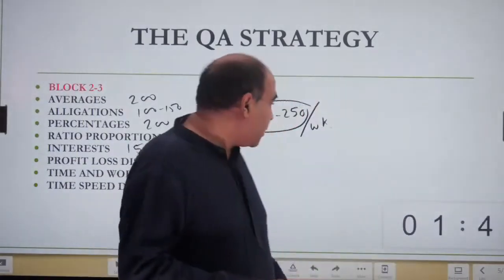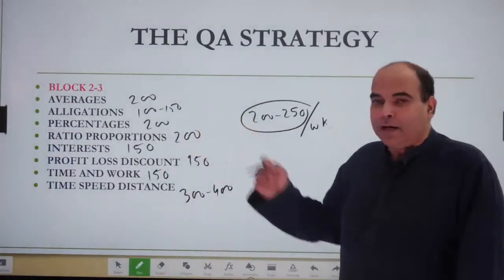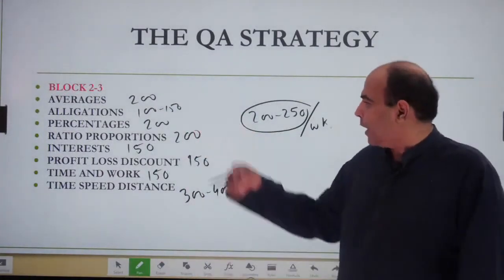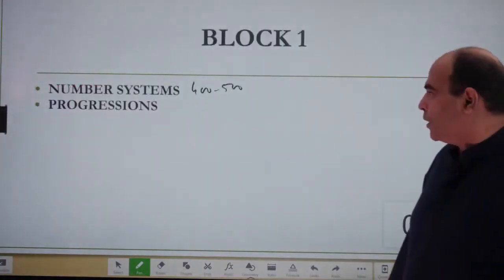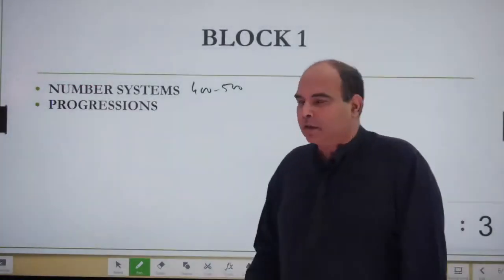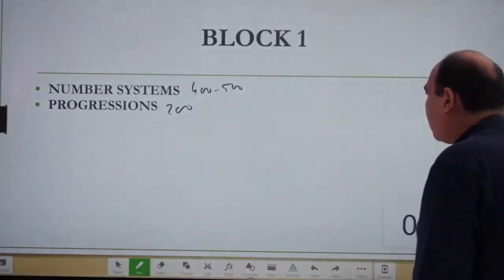You can match chapters to timeframes—maybe allegation in three days, averages in five days, etc. You decide your pace, whether 200 or 250. Progressions is a 200-question chapter, along with number systems, progressions, averages, and ratio proportion.